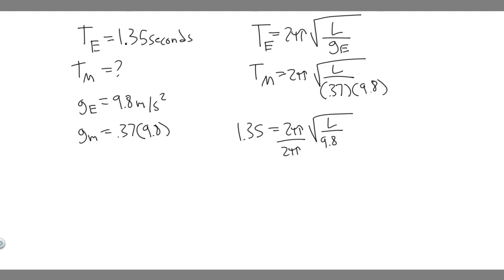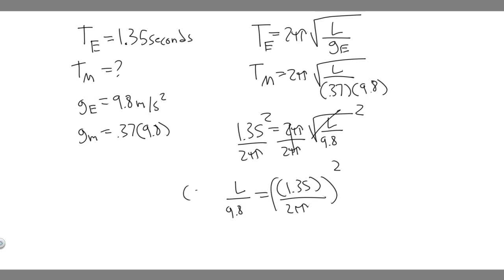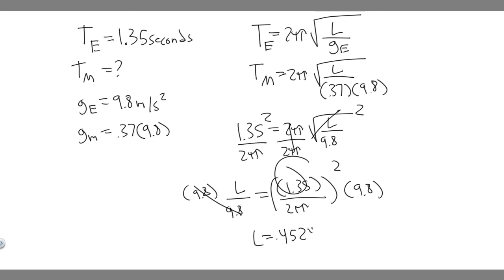To solve for L, divide both sides by 2π, then square both sides to get rid of the square root. You'll get L over 9.8 equals (1.35 over 2π) squared. Then multiply both sides by 9.8. Calculating: 1.35 divided by 2π is 0.2148; squaring that and multiplying by 9.8 gives the length equal to 0.4524117.